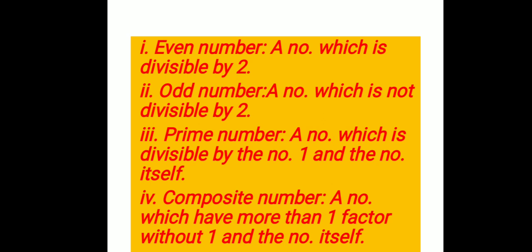Next comes odd number — a number which is not divisible by two. Examples are one, three, five, seven and so on. Now prime number is a number which is divisible by one and the number itself.